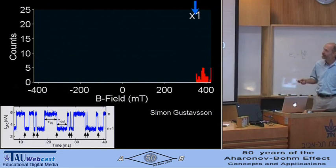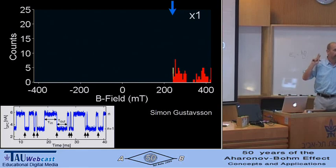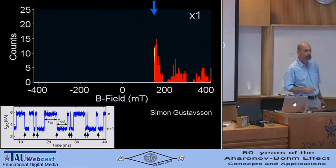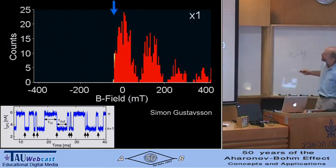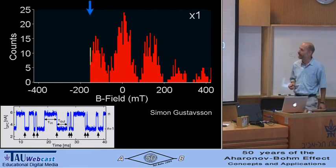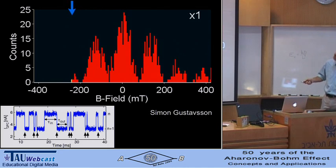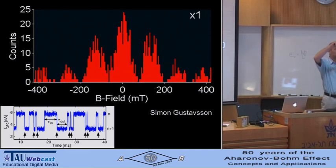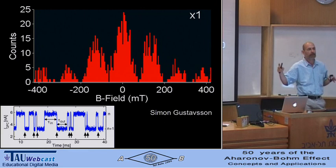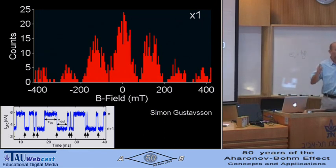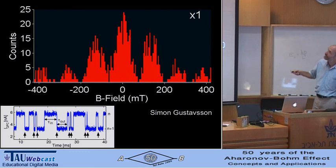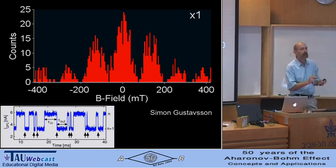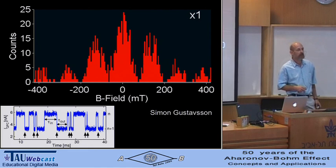Let me show you the data. This is the count rate of our detector on the vertical axis, with magnetic field on the horizontal axis, and you can actually hear the sound on the laptop—we're listening to individual electrons on a semiconductor chip in the lab. You see very nicely how the Aharonov-Bohm pattern builds up as a function of magnetic field. Below is a typical trace at one of those magnetic fields: the detector current fluctuates between two values corresponding to an electron being in and out of the double-dot device. Each downturn means one electron has been transported through the device, and this gives you the count rate.